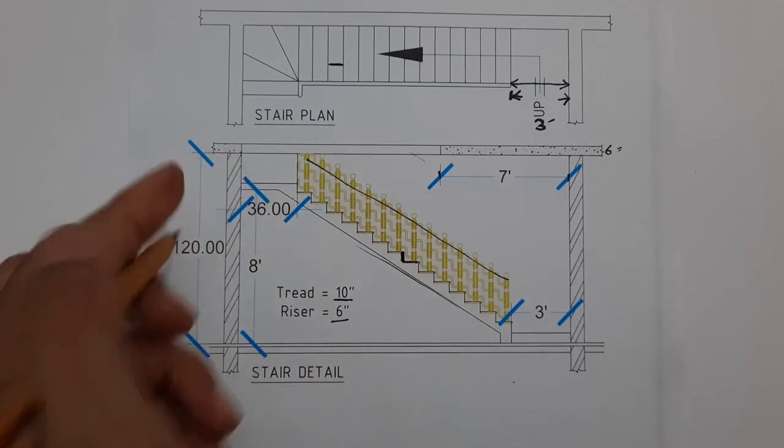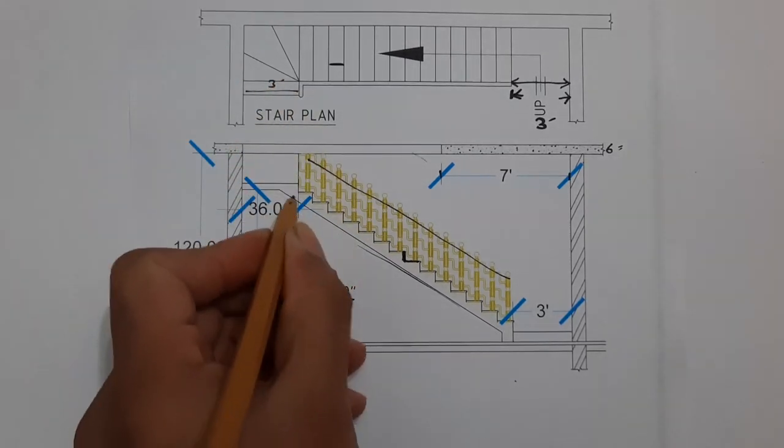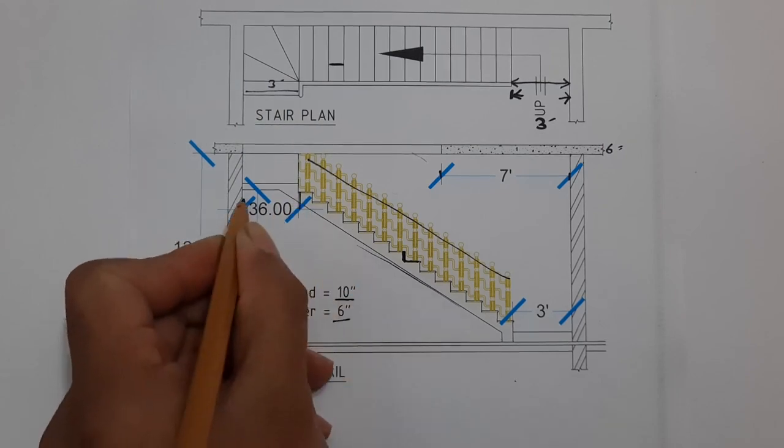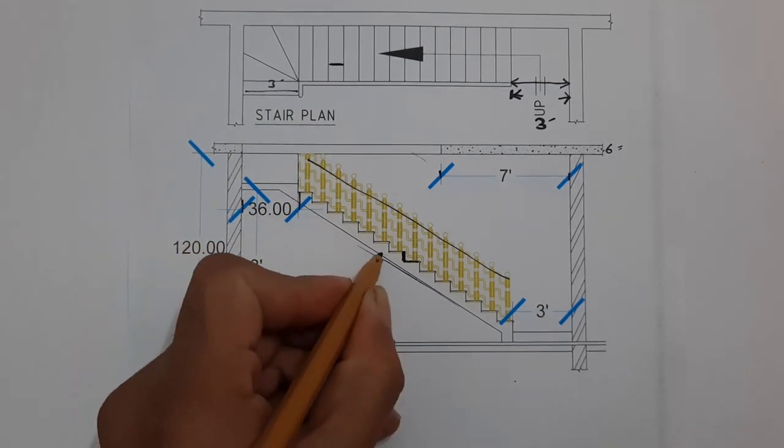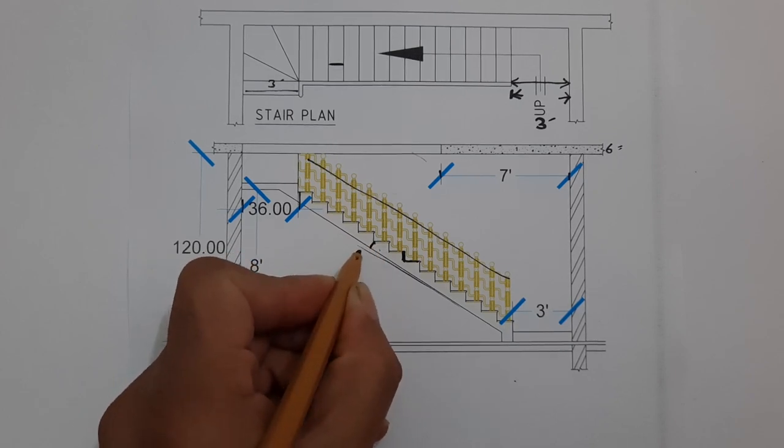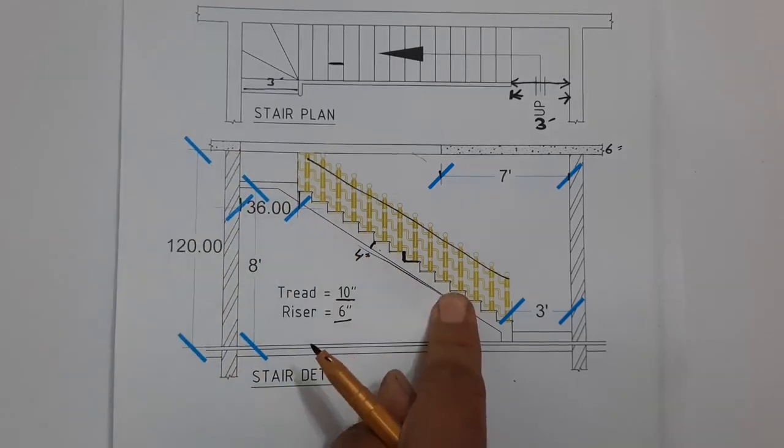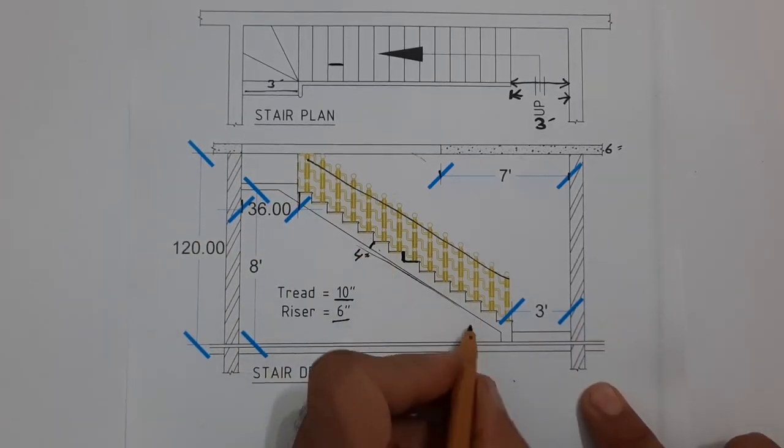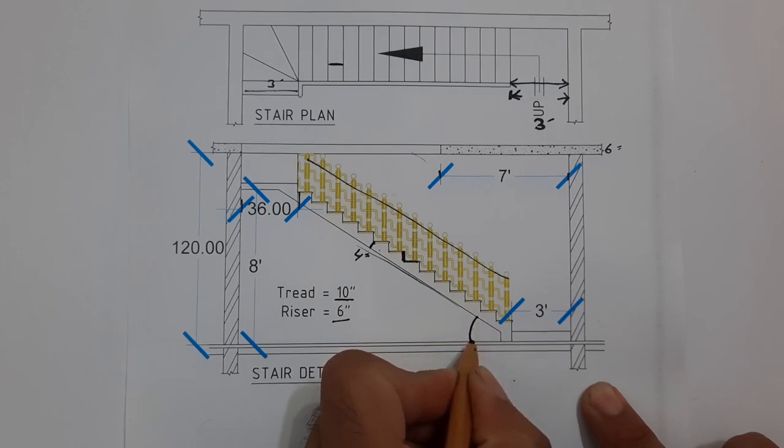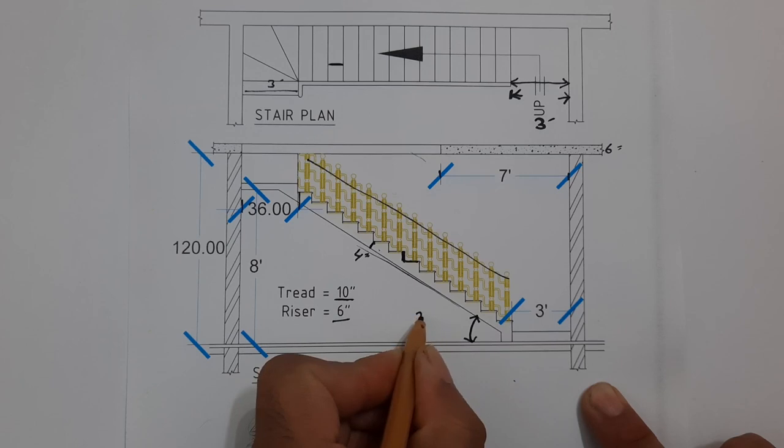So here again, this is 3 feet width. You can see here, from here to here this is 36 inches. So remember, this waist should not be less than 4 inches. The waist should be 4 inches, but here this angle should not be more than, so it should be between 25 to 40 degrees.